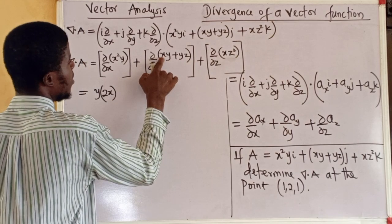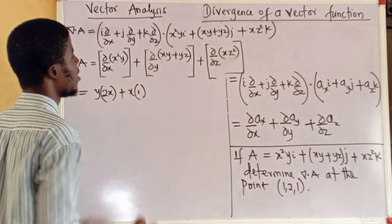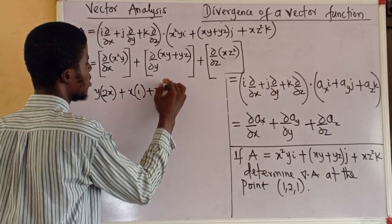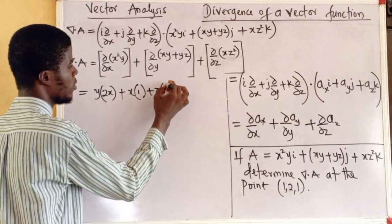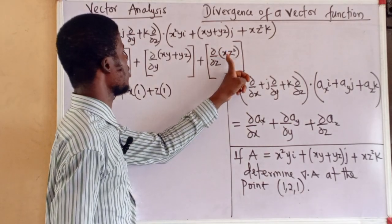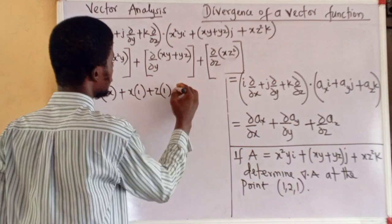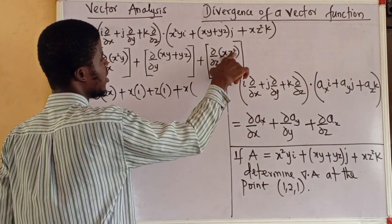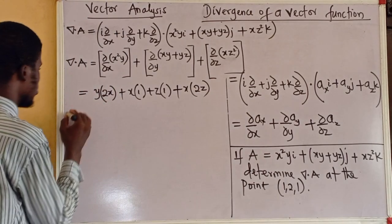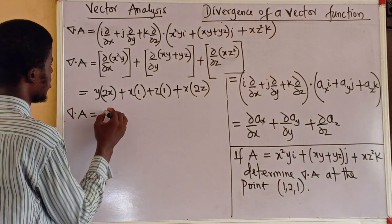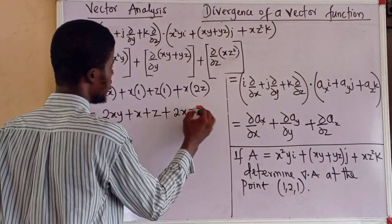Differentiating xy with respect to y keeps x as a constant, giving x. Differentiating yz with respect to y keeps z as a constant, giving z. Then differentiating xz² with respect to z keeps x as a constant, so differentiating z² with respect to z gives 2z. So the divergence of A is 2xy + x + z + 2xz.